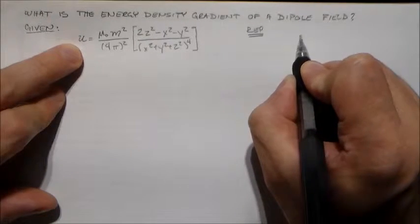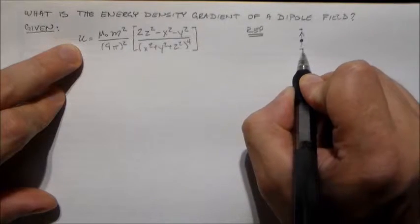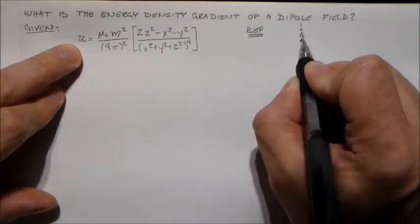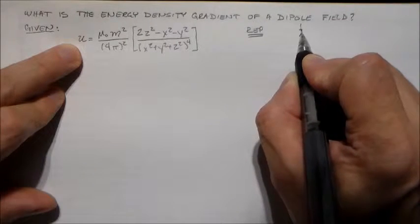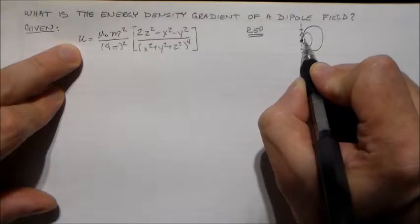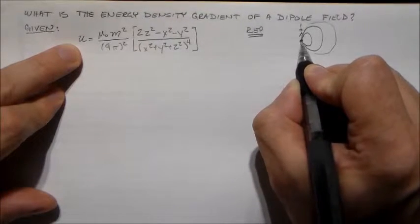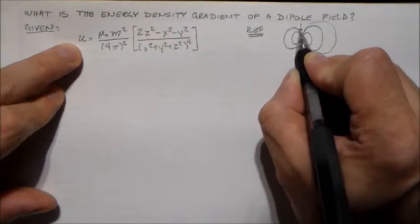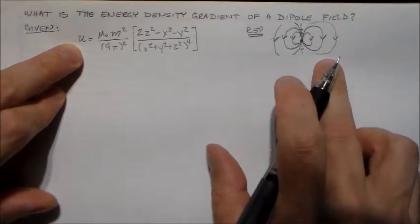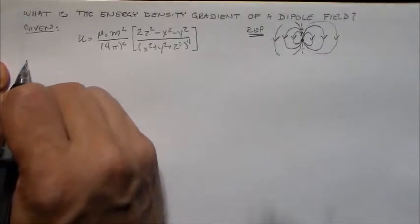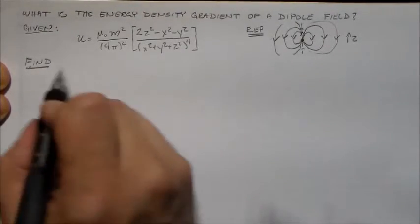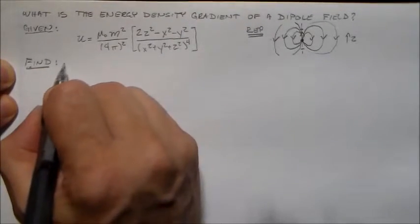Just to remind you, a dipole is something like this. So if we have a point dipole here, it's going to have a positive and a negative edge. We represent it by this arrow, and this is all at this point here. Then we have field lines coming out like this and, like I said, dropping off as the cube of the distance — something like that coming around here, up and around, up and around. So it looks sort of like that. This is its energy density, and what we want to do — again, it's the energy density if this is the z direction, if z is going up there — we want to find its gradient.